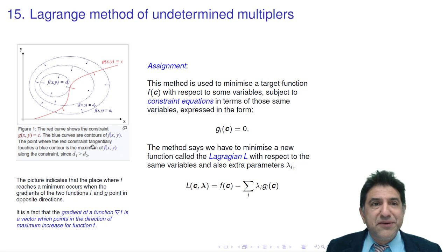There you go. I've explained to you Lagrange's method of undetermined multipliers, and you will need that to enforce the orbital orthogonality condition in the Hartree-Fock equations. See you later.